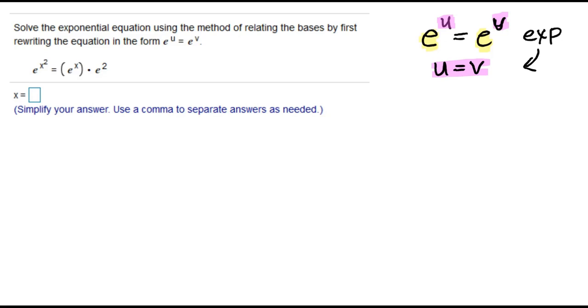Our equation says e^(x squared) equals e^x times e^2. On the left, I already have what I'm looking for, a base of e. On the right, I've got to simplify using my rules of exponentials.